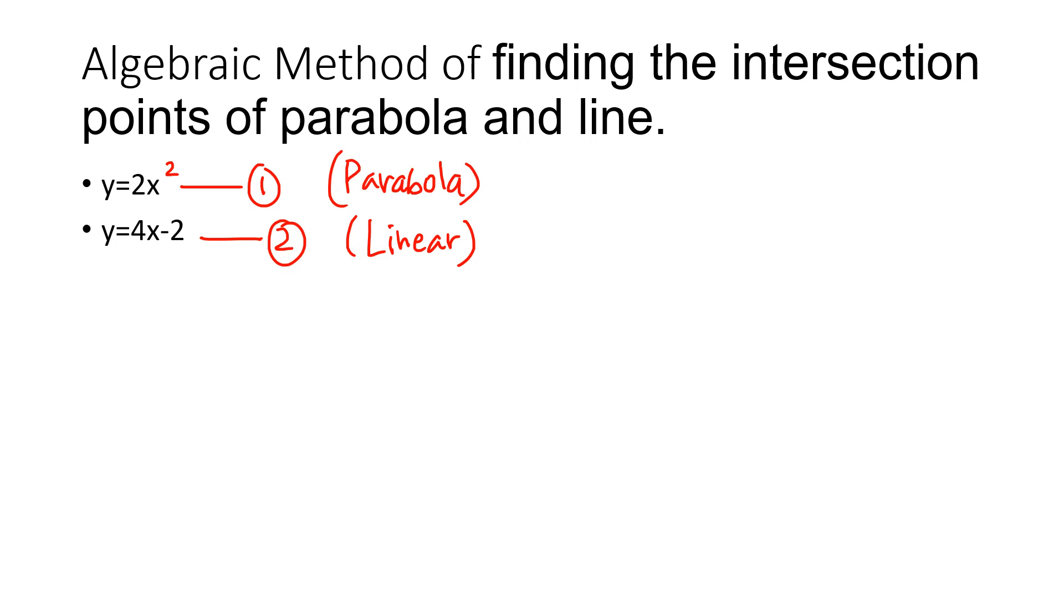The method we'll be using here to find the intersection points is substitution. I'm going to substitute in place of y, 4x minus 2, in the first equation. Also, because both are equal to y, the left-hand side of equations 1 and 2 is the same, so the right-hand side will also be the same. So 2x squared equals 4x minus 2.